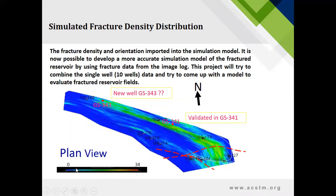And try to come up with the model to evaluate fractured reservoir fields. As you see here, the measurement scale is from 0 to 34, from blue to red. Here we have less fracture density, and here we have the highest fracture density.